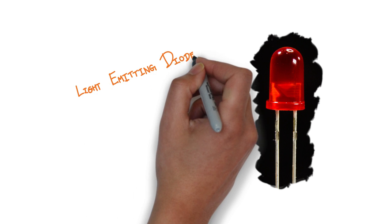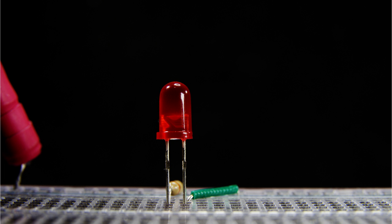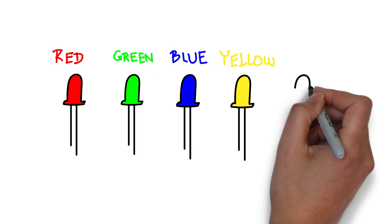A light emitting diode, or LED, is a special type of diode that emits visible light when current passes through it. LEDs come in a variety of colors, such as red, green, blue, yellow, or white.